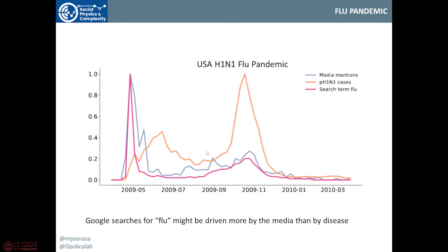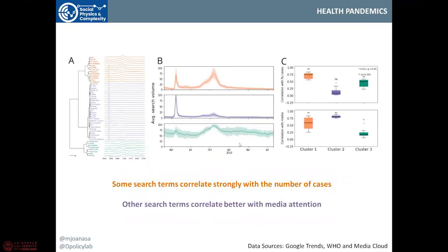But if we could distinguish the terms that people use when they are sick from the terms that they use when there is a pandemic going on, or when they are afraid, or when the media mentions it a lot, we could improve our signal-to-noise ratio. This was the idea behind what Sala and Cloud did. They searched for many different terms related to the flu, clustered them, and found that some search terms correlated very strongly with the flu cases, while others correlated very strongly with the frequency of news about the flu. Our prediction would be that searches correlating very strongly with cases would be better at predicting seasonal influenza.